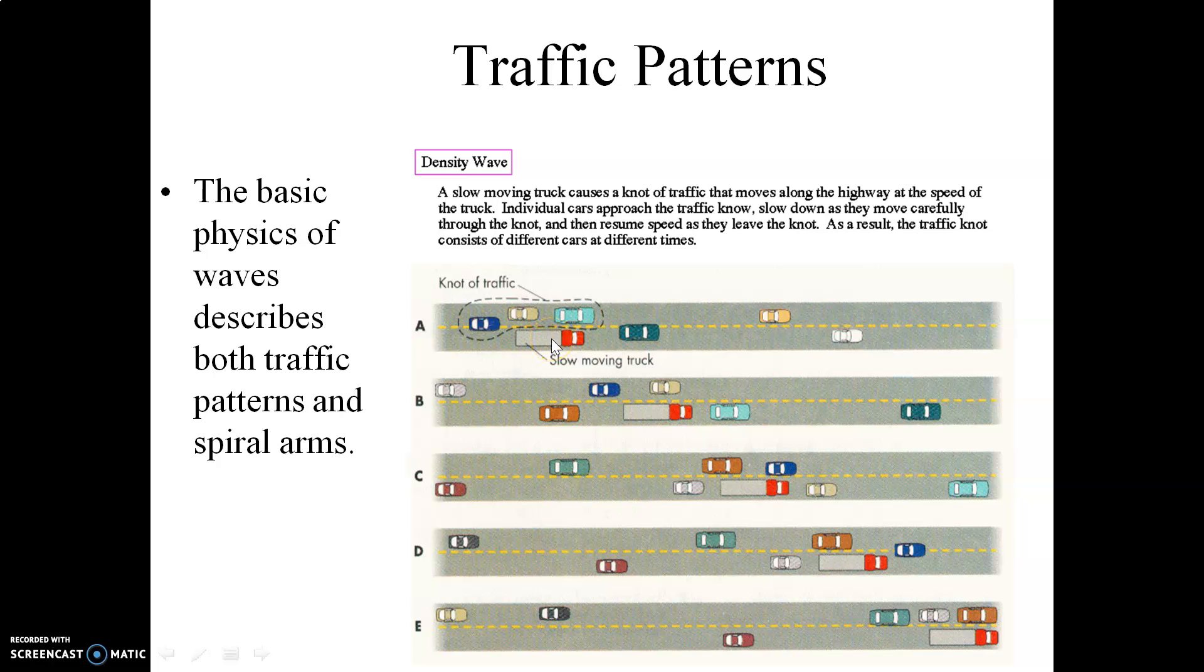Notice that as the truck moves along the highway from here to here, periodically you have cars that have to slow down and move around the truck and then pass from the truck like so in this direction. So the individual cars are moving faster than the wave. Think of the wave as this compression that happens like so around this slow-moving truck.